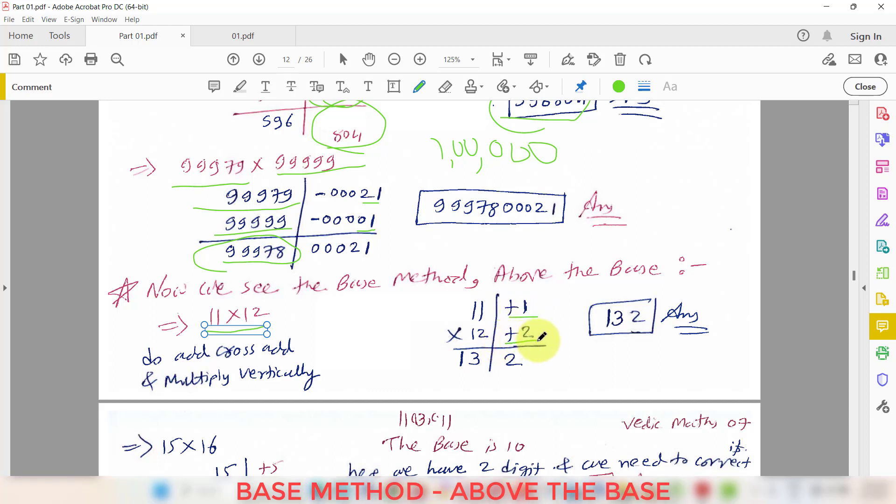This carry forward and digit you have to keep in mind. Here you can see we have two digits and we need to correct it. So 21 plus 3 that is 24 and then after last is 0.